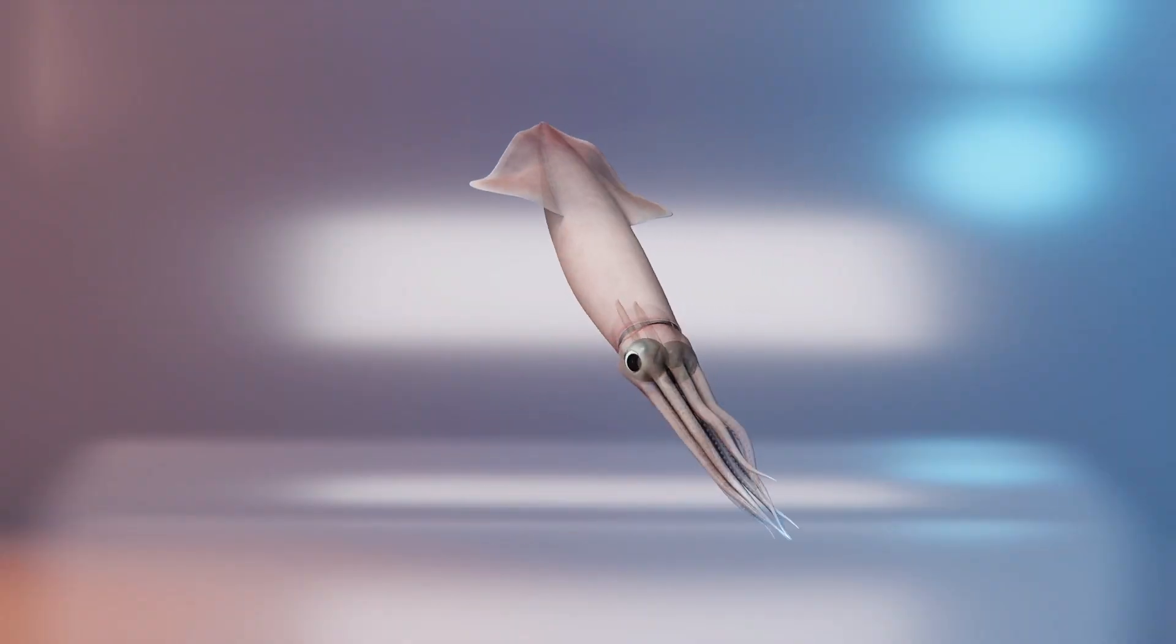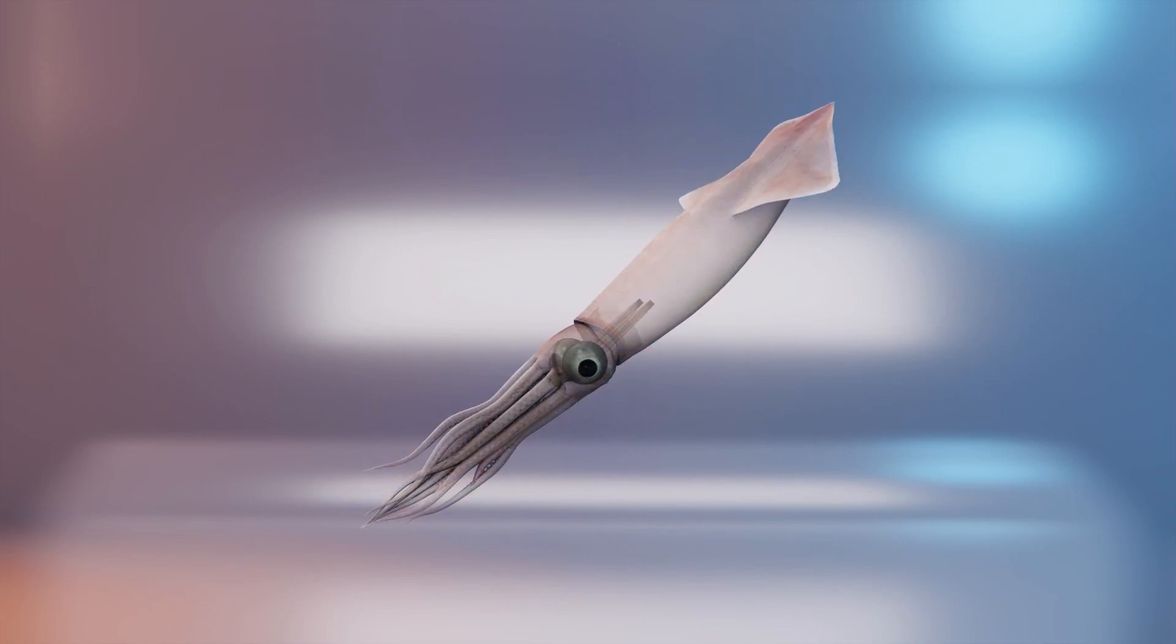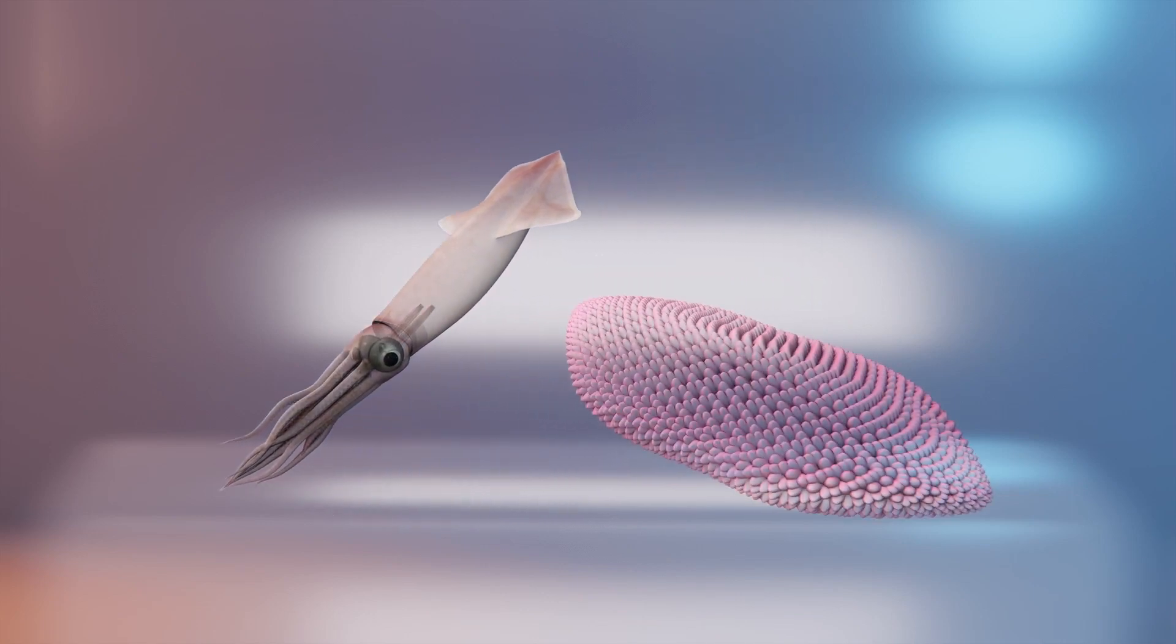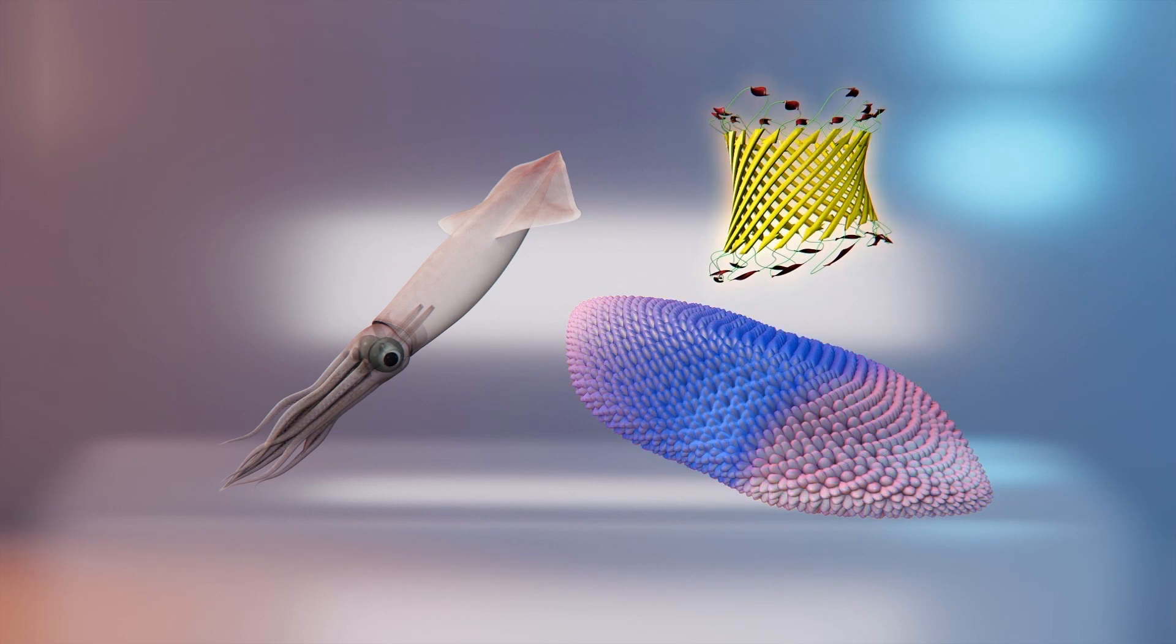According to the study in Nature Communications, squids and octopuses can cloak because their skin contains leucophore cells, which includes protein molecules called reflectins. This substance scatters light and creates an iridescent camouflage.